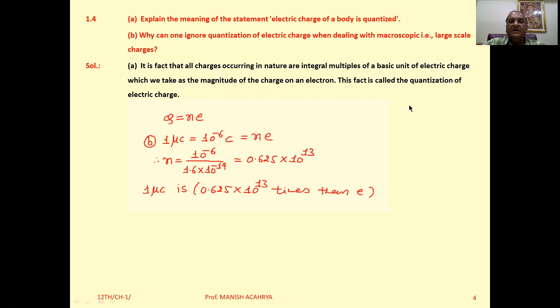The charge available in nature is always an integer multiple of the charge of an electron, or we can say proton. Magnitude-wise, it is 1.6 × 10^-19, and it is represented by small e.